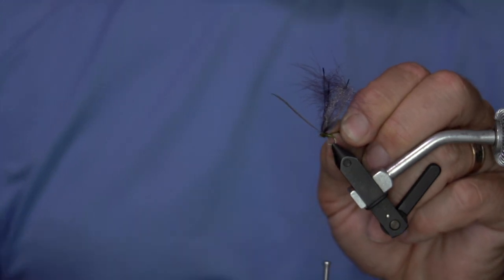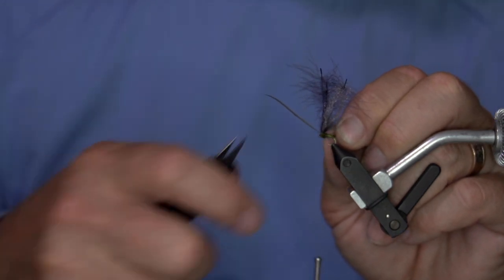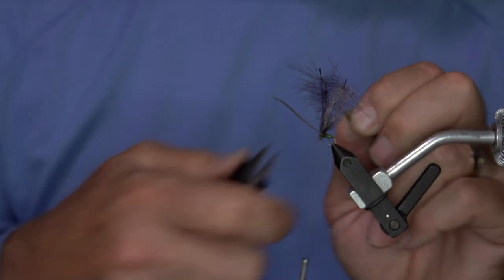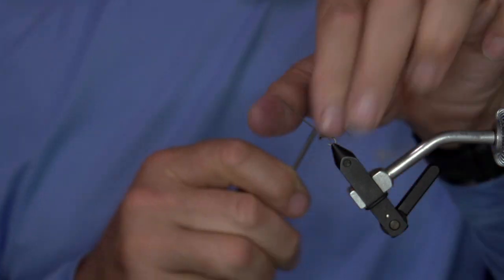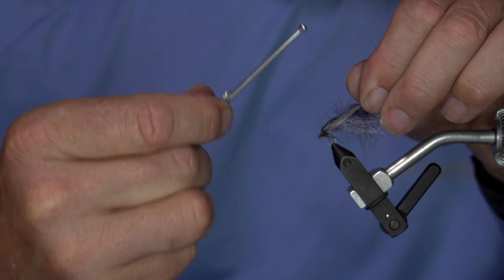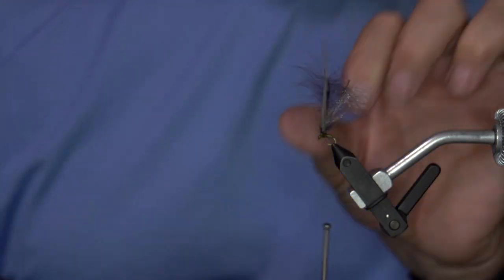You don't need to worry about a taper because we're just working on the thorax here. Get that tight. Make one wrap around. Then you should be able to lock it in. Couple wraps here to build up that thorax a little bit. Pull that off and then you can trim that excess.